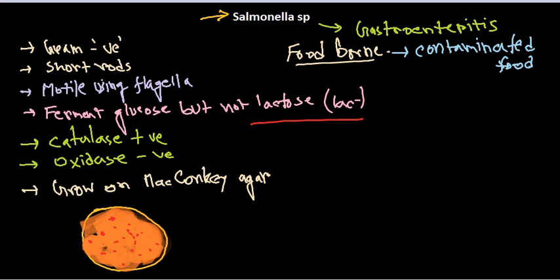Another important ability of Salmonella is to generate H2S, or hydrogen sulfide. If it degrades sulfur-containing amino acids like cysteine, it will generate hydrogen sulfide gas.